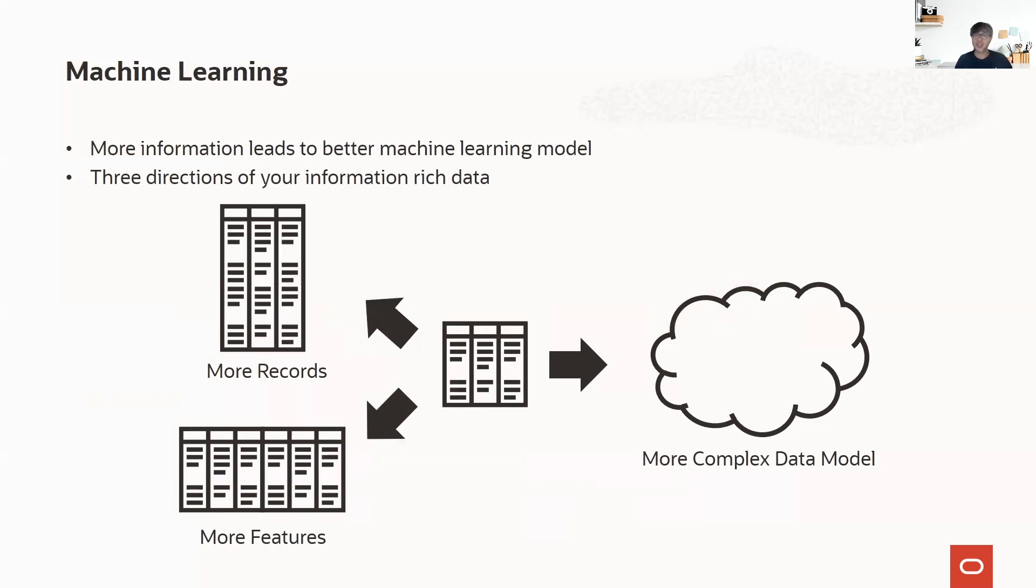We can say that in three ways. First, when we have more data records. Second, when we have more features. Third, when we have a more complex data model. The first two look trivial. However, what does the last one, the complex data model, mean? That's the point where the graph and the graph machine learning take part in.